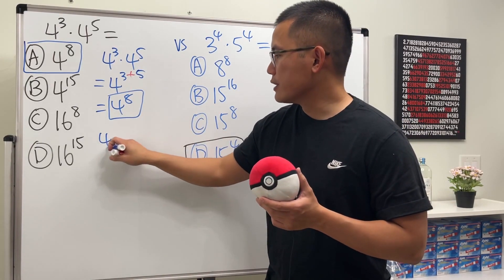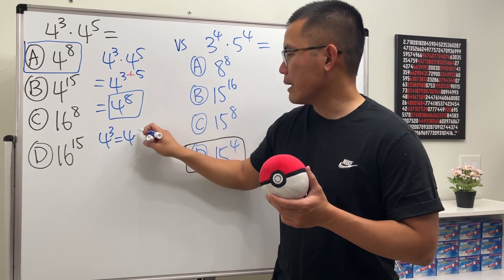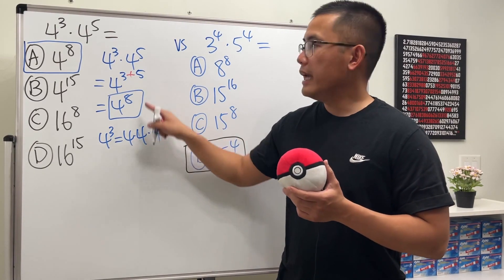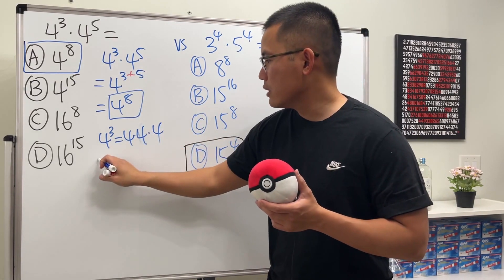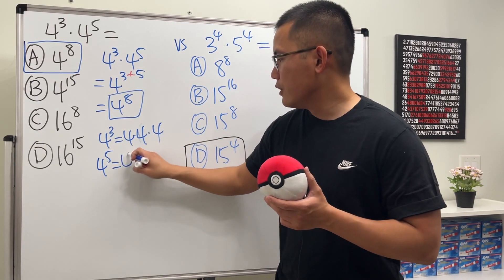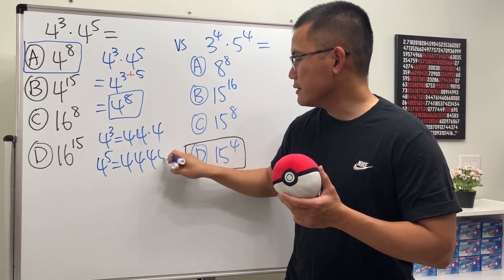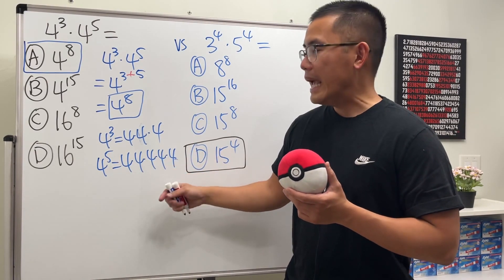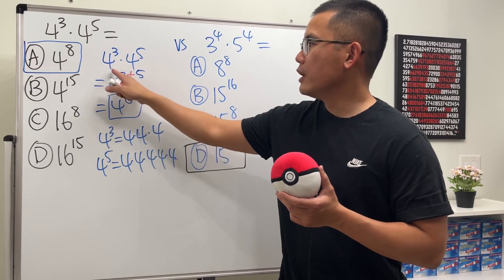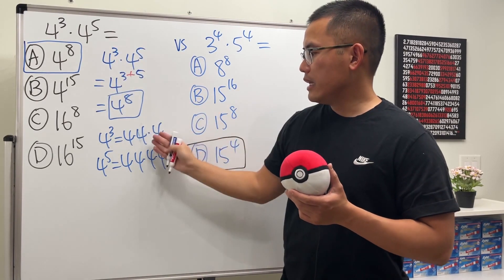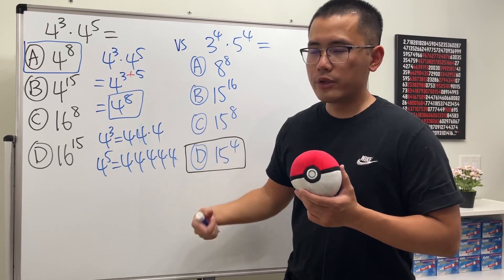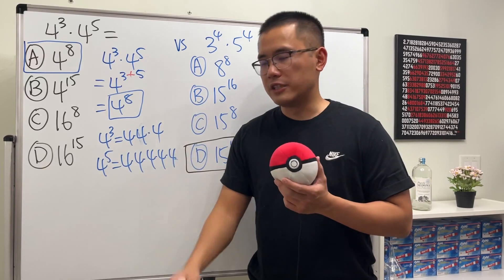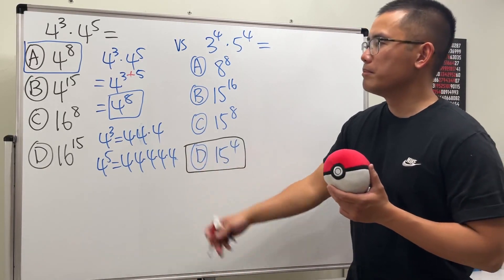That will be 4 to the 8th power. Here's the reason: when we have 4 to the 3rd power, this means 4 times 4 times 4 — 3 of them. And when we have 4 to the 5th power, this is 4 times 4 times 4 times 4 times 4 — 5 of them. Altogether, when we multiply them, we have 3 from here and 5 from here, giving a total of 8 fours multiplying. That's why the base stays the same.